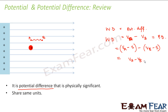Both potential and potential difference share the same unit: the volt. By standard convention, potential is taken as zero at infinity. Knowing all these things will make it easier to solve numericals. Before we proceed to numericals, we will look at more expressions for potential due to different kinds of charge distributions — one of which we already saw: the potential due to a point charge.